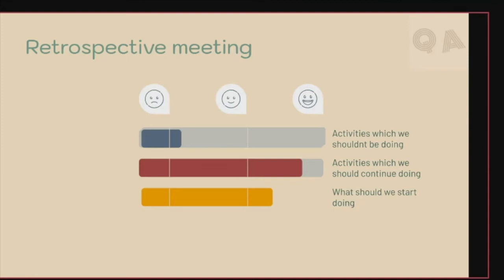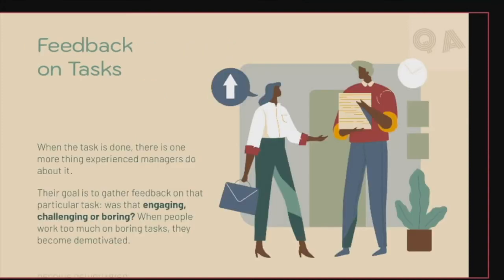The next agile practice is feedback on tasks. Whenever a task is done, an experienced manager will give feedback on the completed work. The main intention is to check how the task is — whether it is engaging, challenging, or boring. If people work too much on boring tasks, they can easily become demotivated, resulting in less productivity, so it's better to keep the team's tempo high.